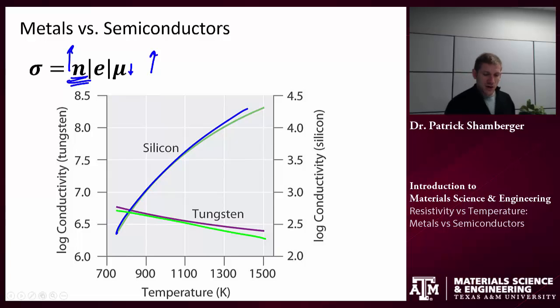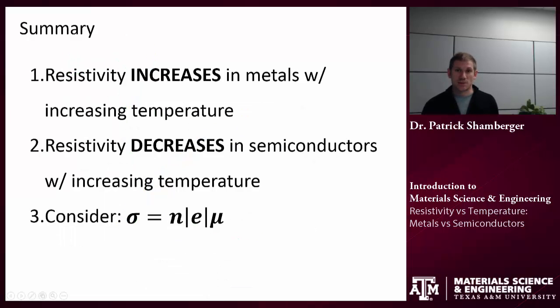In tungsten, a metal, yes, I will have a few more carriers. But the decrease in mobility is going to be a lot more significant. And so that is going to cause the overall conductivity to decrease in the tungsten case. So both of them have the same trends in number of free carriers and mobility. But because the semiconductors are carrier starved, that impact of the increasing number of carriers is much more important than the impact of the decreasing mobility. In metals, I have that opposite process.